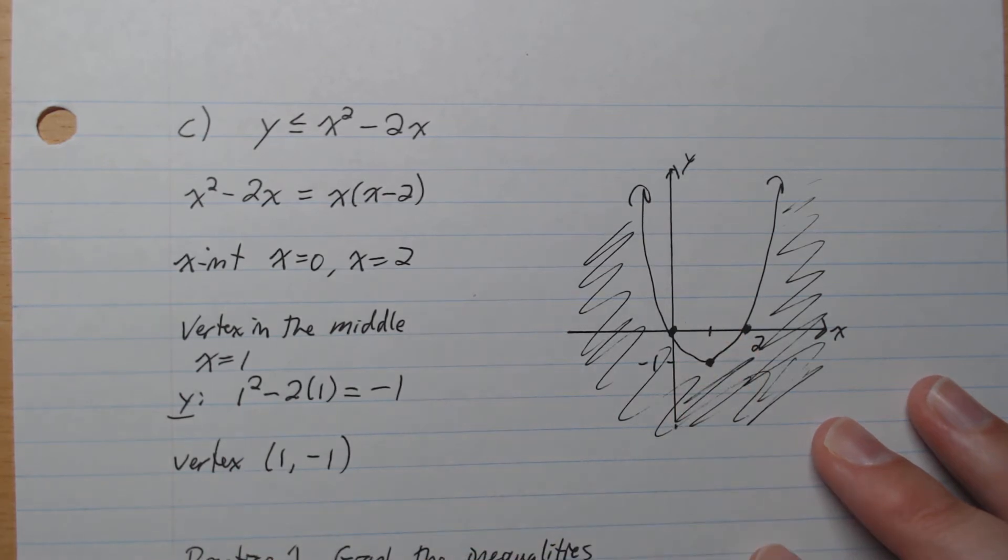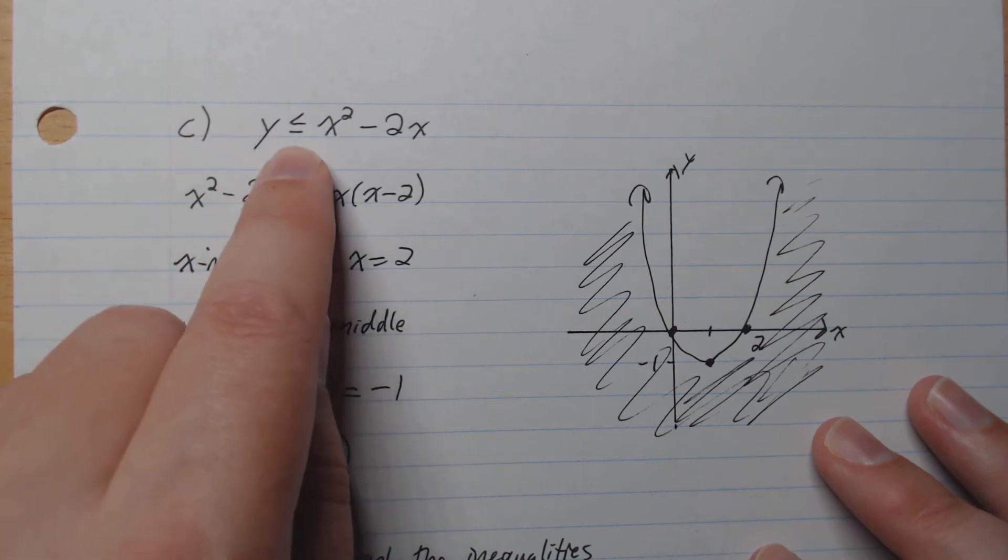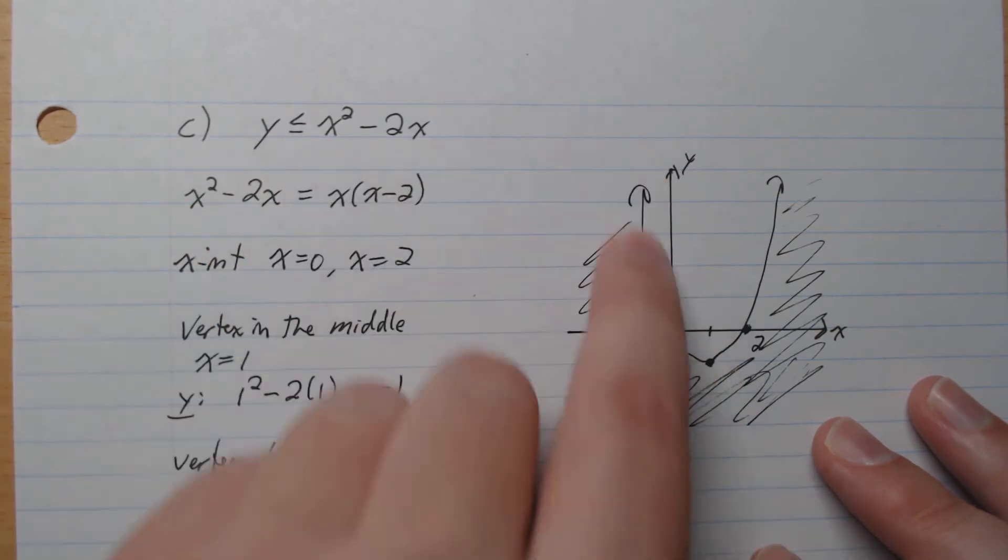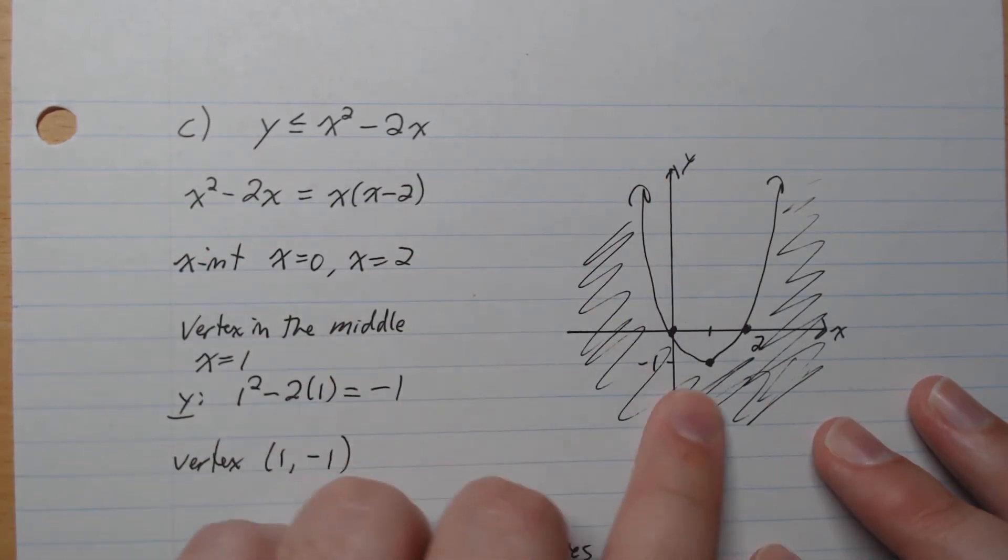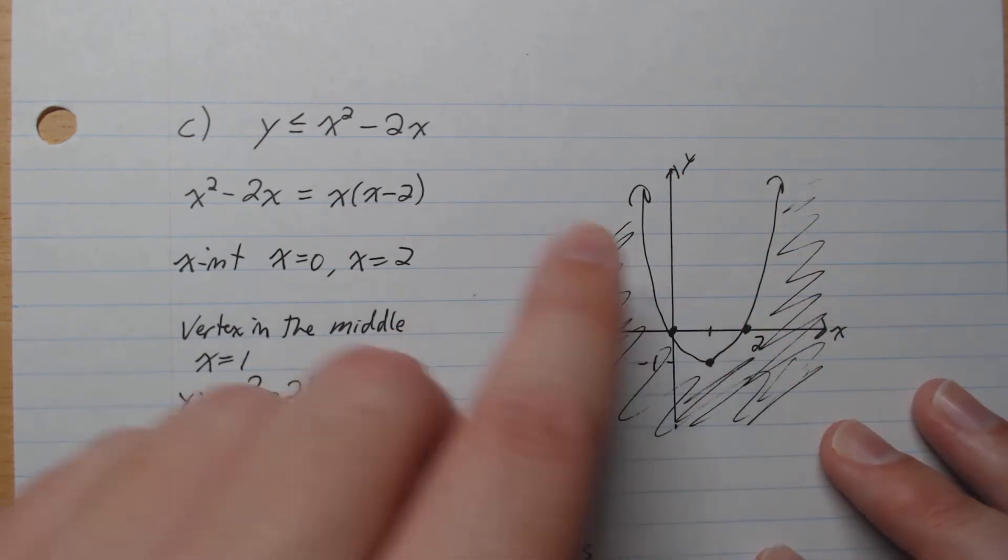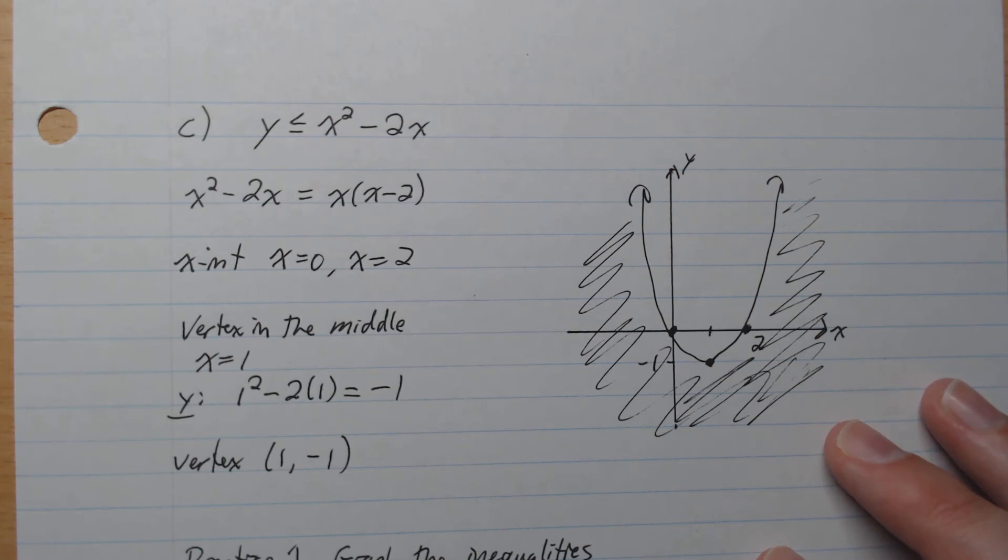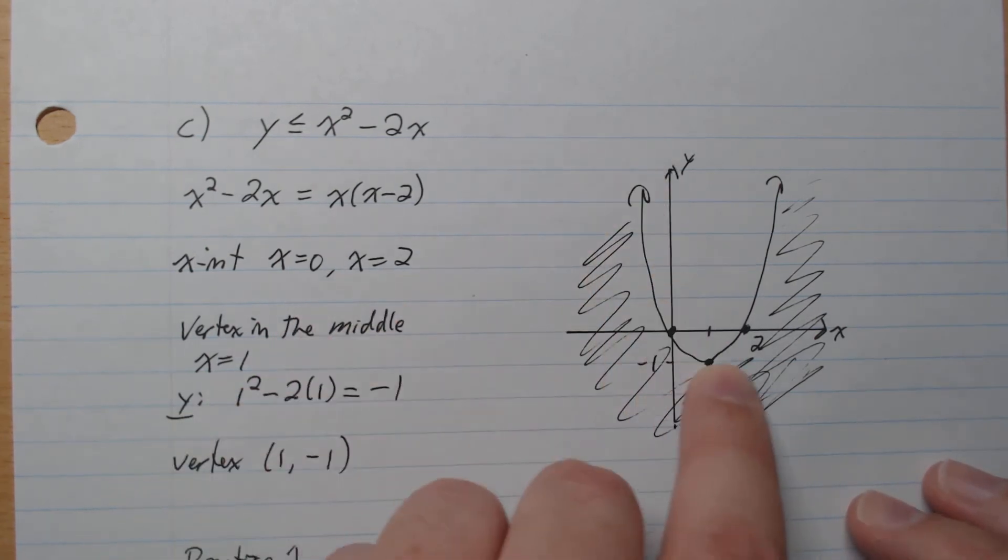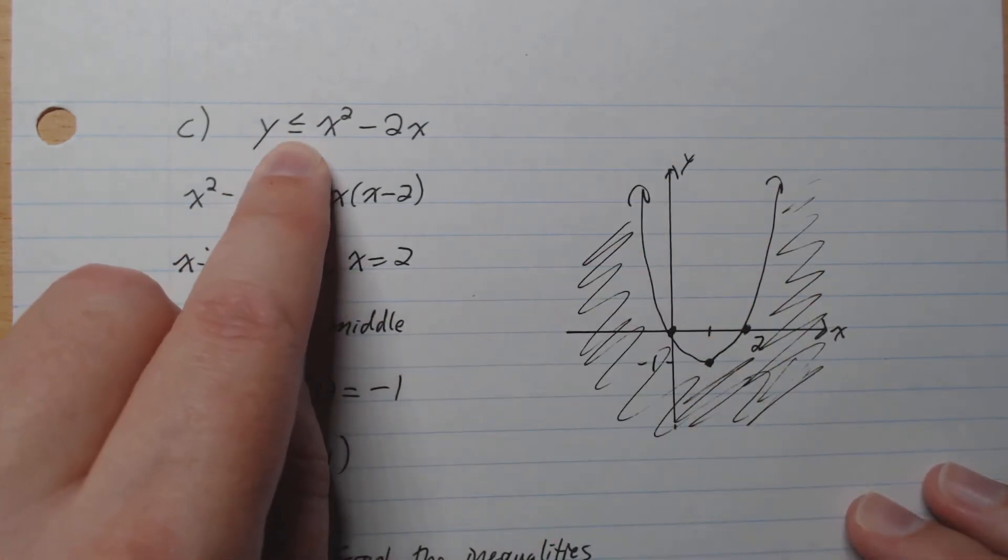And what we're looking for is y being below that function. So we have our function here and the y is below it. So any point from this solution region is the solution to the inequality like that. And it's a solid boundary line because you're allowed to be equal.